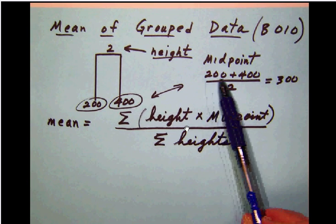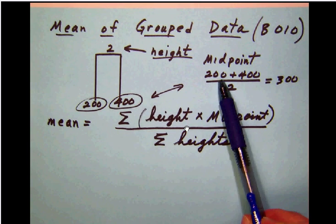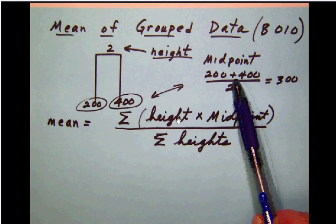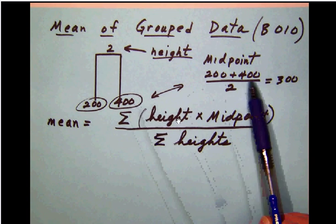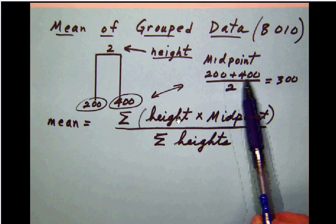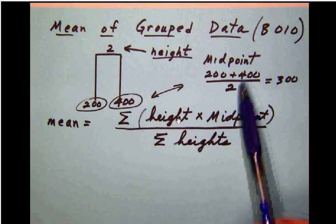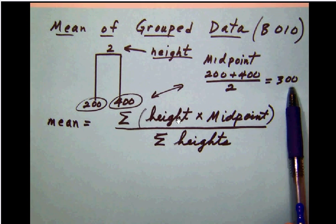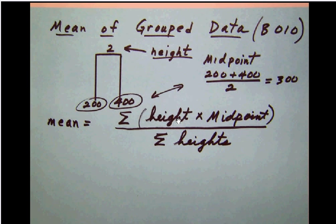You simply take your first class boundary, the 200, take the next class boundary, the end of that bar, which would be 400, add those two numbers together, which would be 600, and divide by 2. That'll give us 300, and that's going to be our first midpoint.